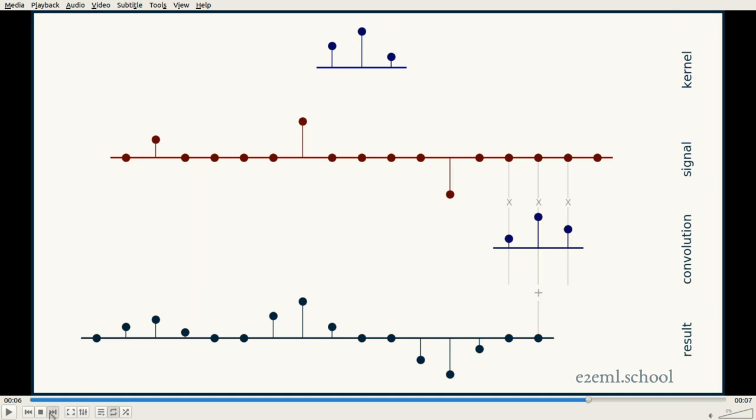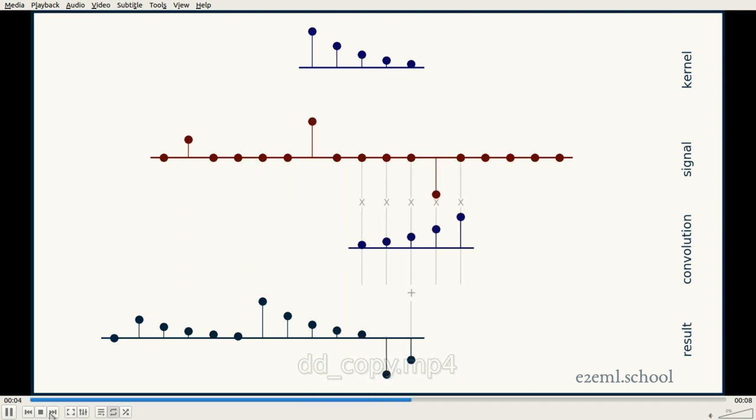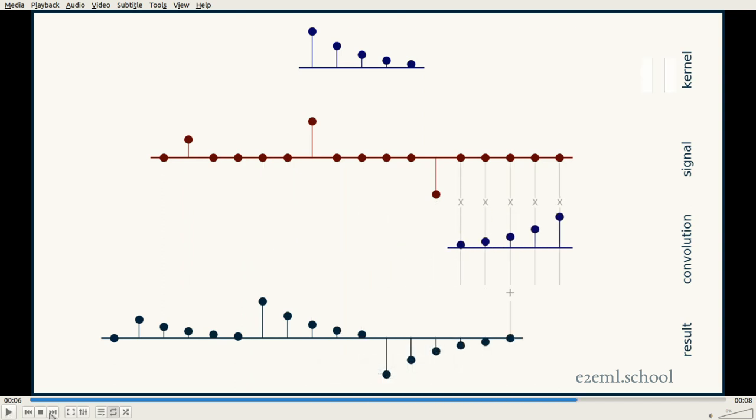We can see here even with the different kernel we get the same result. By taking it, flipping it, and doing the sliding dot product with the signal, a sparse signal will take that kernel and make scaled copies of it.